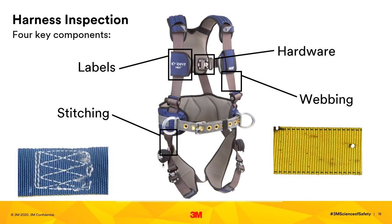You should check the four key components of a harness. Labels should be present and fully legible. Check the hardware — make sure that it is free from rust, pitting, or corrosion, and that plastic components are not damaged, broken, or distorted. Check the webbing for frays, cuts, tears, burns, abrasions, paint, or contaminants that conceal the fibers. Check the stitching — there should be no broken, loose, or missing stitches.